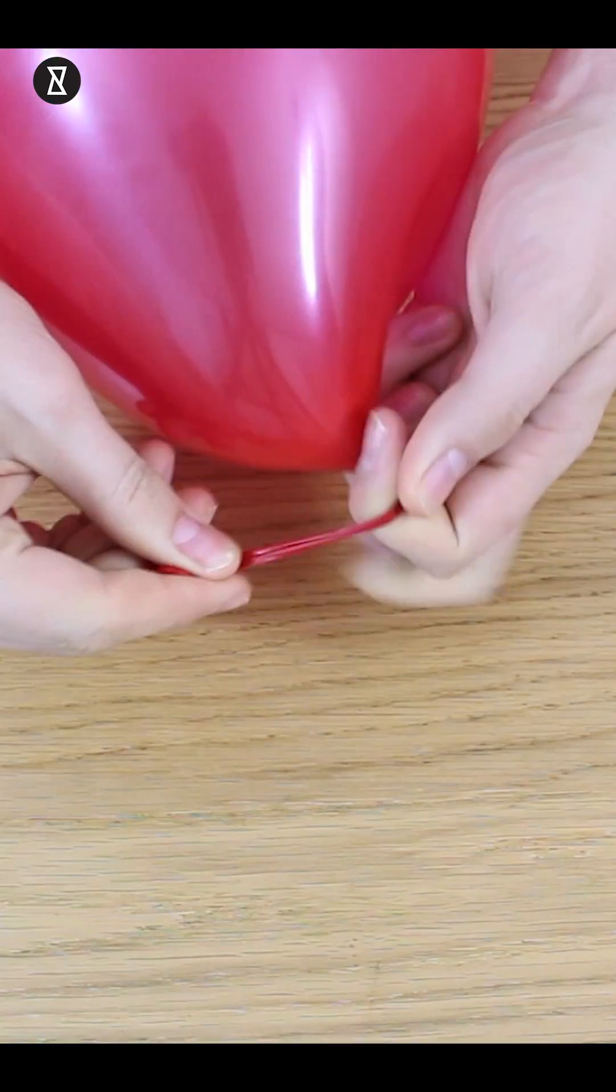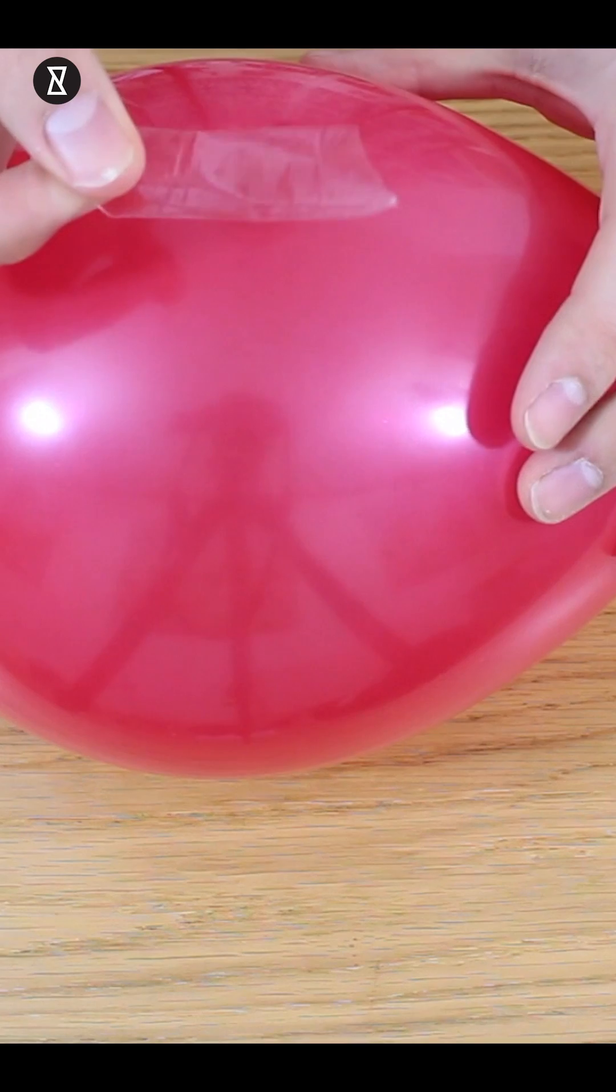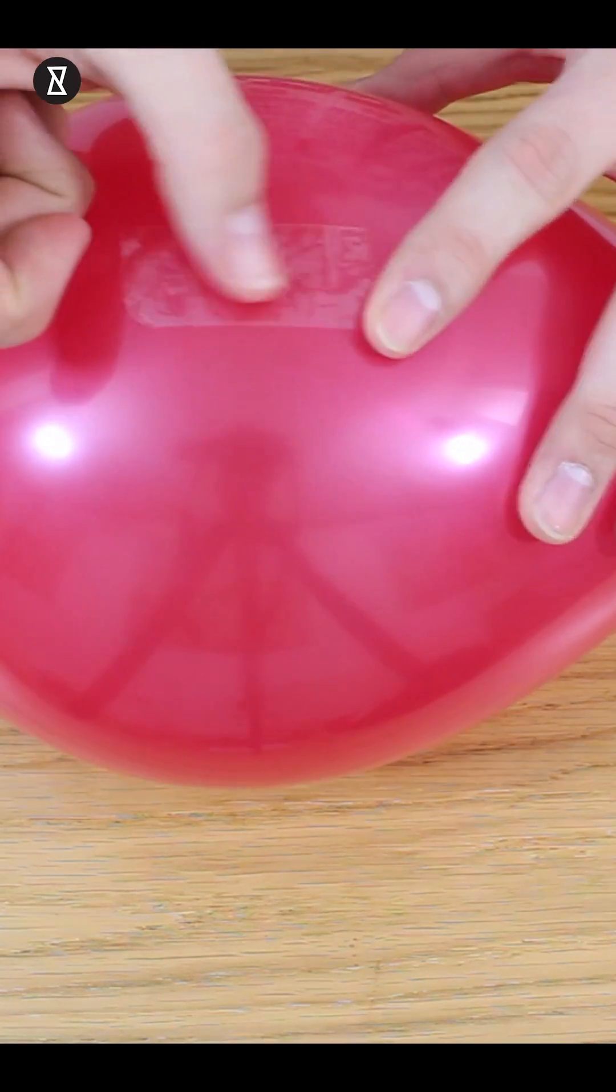Once you've blown it up, very carefully tie one end off, then take a small piece of tape and fix it to one side of the balloon.